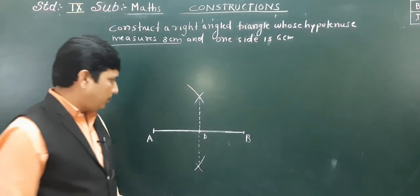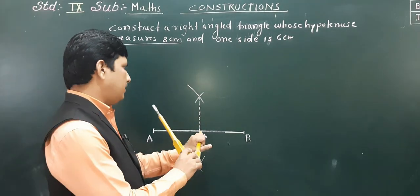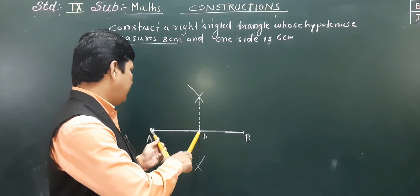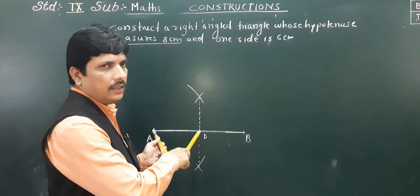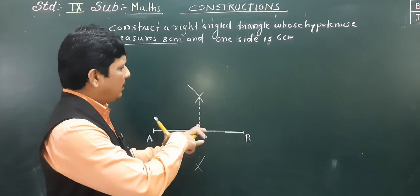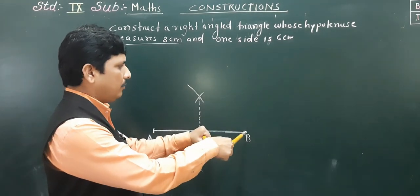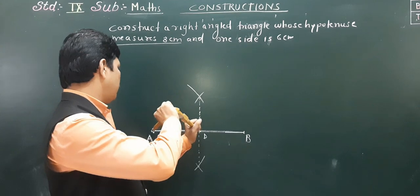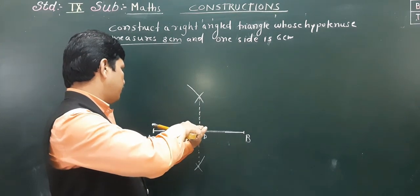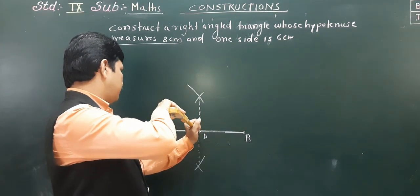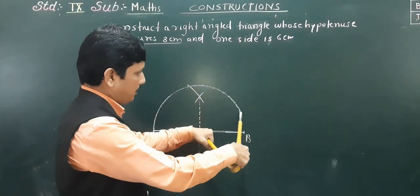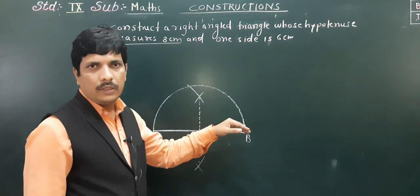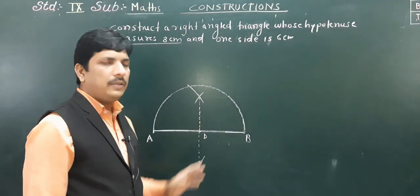Now what we have to do — we need to take a semicircle with D as the center and AD as the radius. It will definitely pass through A and through B also, because AD and DB are equal.